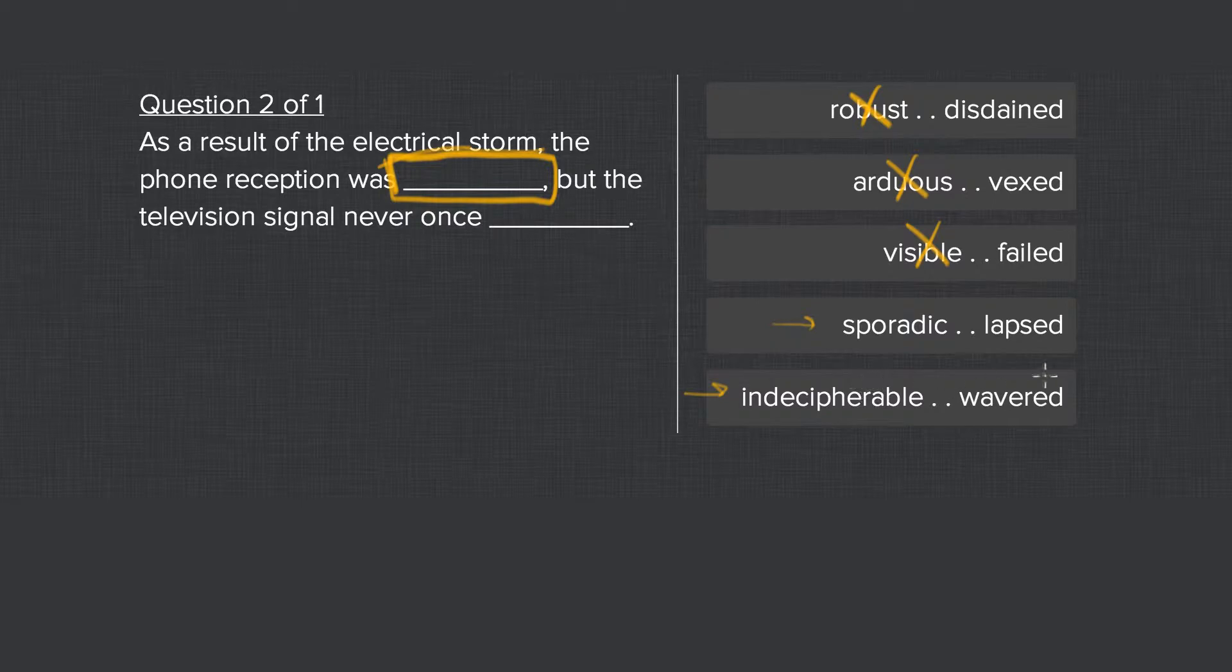Now the second blank is dealing with an opposed relationship. It says but, so that's your opposed signal, the television signal never once and we're looking for something which actually this is more of a support relationship actually.